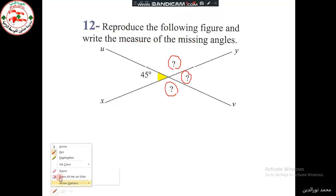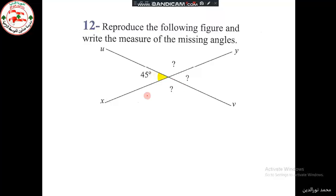First, let's have a look at this figure. As we can see, we have the shape of vertically opposite angles, because they have the same vertex and the sides of one angle are the prolongation of the sides of the other angle. So they are vertically opposite angles, and we have a very important property for vertically opposite angles: